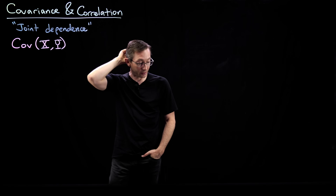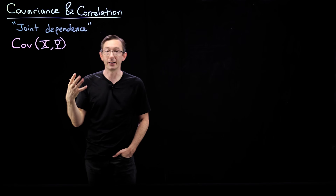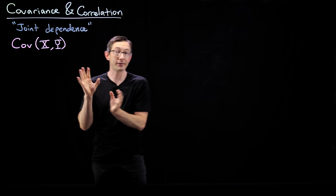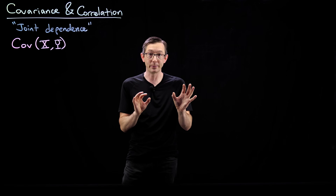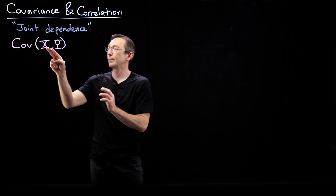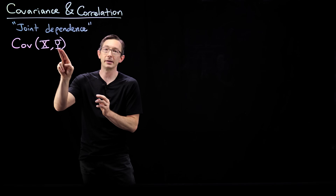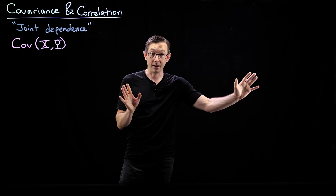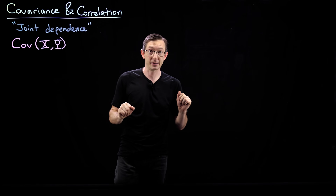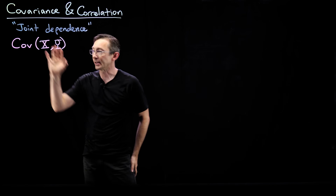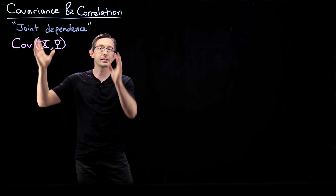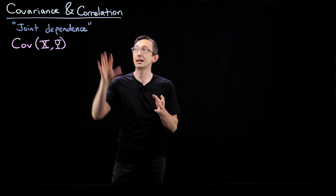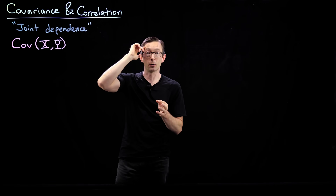That's going to be a really important property. Whatever we define as the covariance of x and y, if I plug in two copies of x, I want it to equal the variance of x. So let's define this, talk about some examples, and then define correlation.